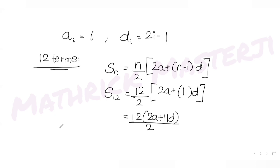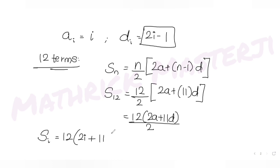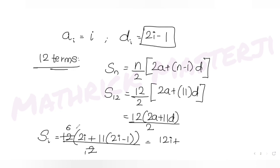Writing S_i in terms of i: substitute a_i = i and d_i = 2i − 1, so S_i = (12/2)(2i + 11(2i − 1)). Simplifying: the 2 and 12 cancel to give 6, so S_i = 6(2i + 11(2i − 1)).